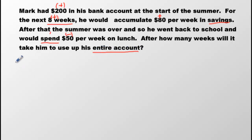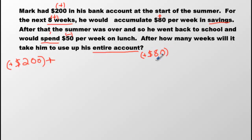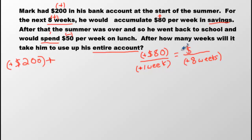How much does he have in the bank? We know he started at $200, so we can write positive $200. Then he accumulated some more, so we'll put a plus sign. He accumulated $80 per week for eight weeks — we can set up a ratio. So this should be positive $80 over one positive week, and we want to convert this for eight weeks. We have 8 times 80: 8 times 8 is 64, so that's $640 he accumulated.